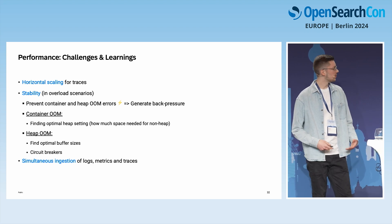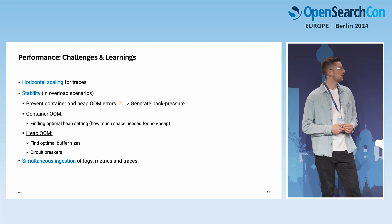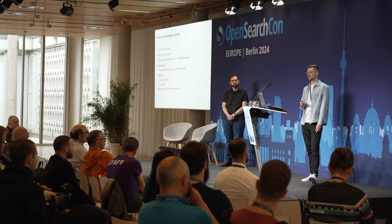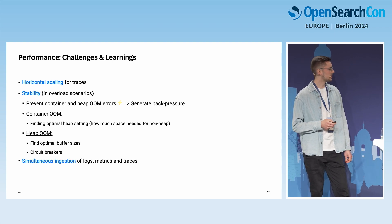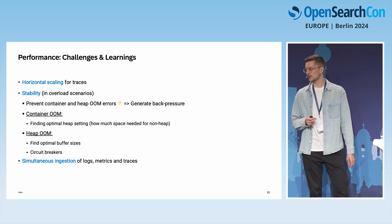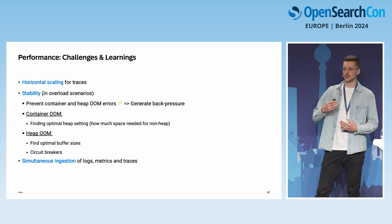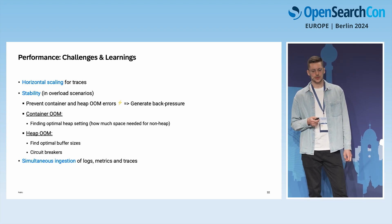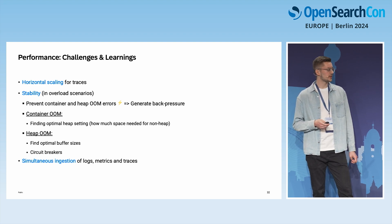Instead of running out of memory, we want to generate back pressure and reject incoming signals in overload scenarios. To prevent the container from running out of memory, the first point is finding optimal heap settings. In our case, out-of-memory errors happened due to non-heap requiring more space. We try to find out how much space non-heap actually requires and then limit the heap size accordingly. The second thing is how to prevent the heap from running out of memory — first, find optimal buffer sizes. With in-memory buffers, the higher the buffer utilization, the higher the heap utilization. Check whether your heap settings can hold fully-utilized buffers — if not, that's a first sign to decrease them.